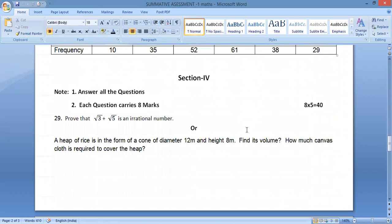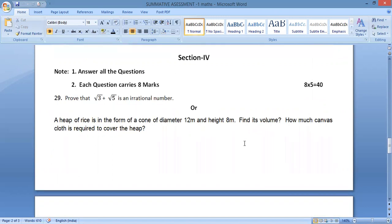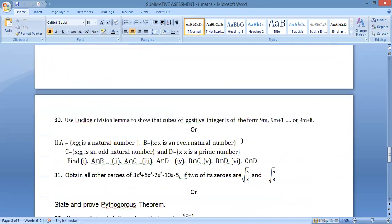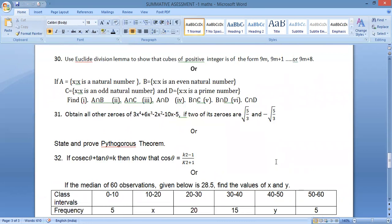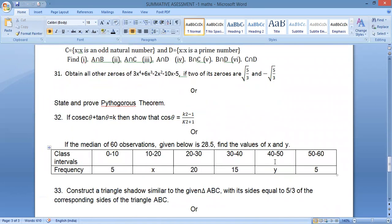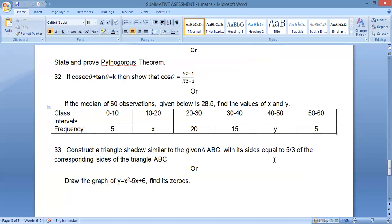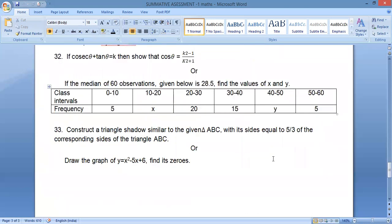In the next section, 8 marks. This is internal choice. For example, 29 or 30. It is very important.